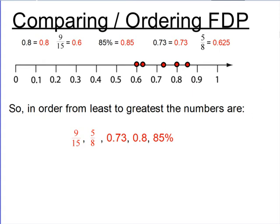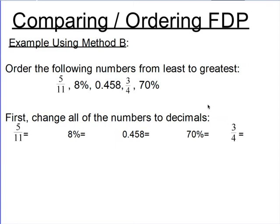Let's look at a second example. I'm going to convert all of these into decimals — while I do that, you do that on a piece of paper. Hit pause, and when you finish, hit play again to see if your numbers match mine. One thing you'll notice is that one of our numbers is a repeating decimal this time, which is going to be important to recognize when you put them in order.